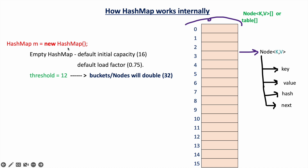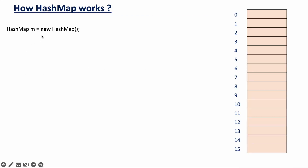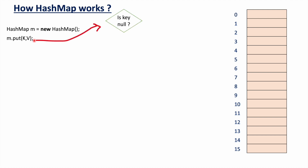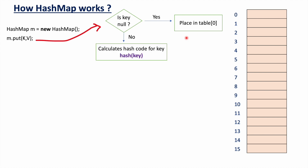When we create a HashMap object, buckets are created based on the initial capacity. Each bucket holds nodes, and each node has key, value, hash, and next. When we call the put() method, it first checks whether the key is null or not. If the key is null, it is placed in the zeroth index bucket — because the hash code for null is zero.